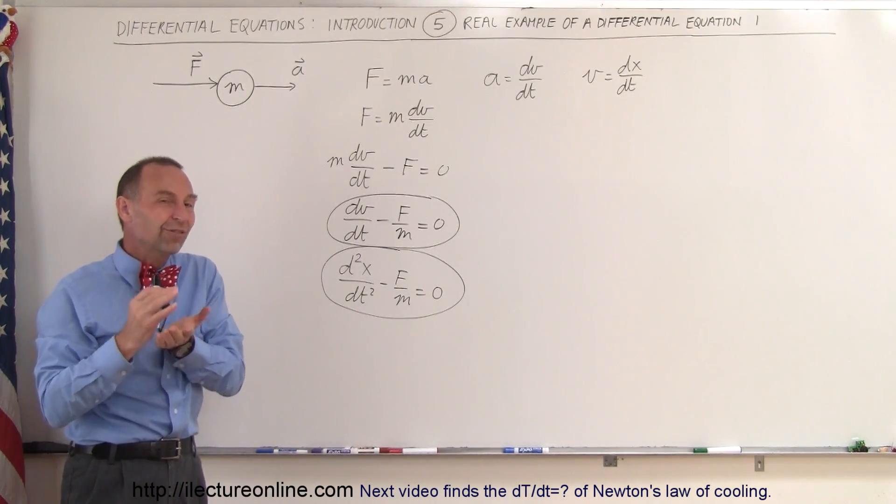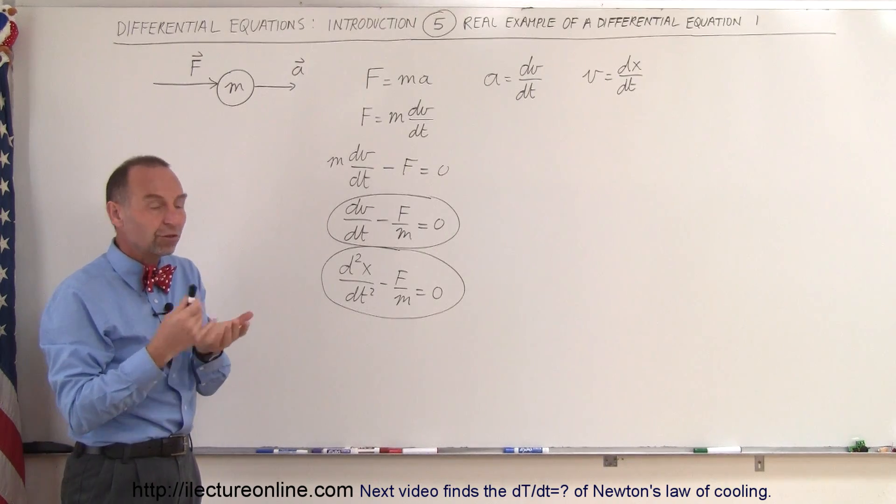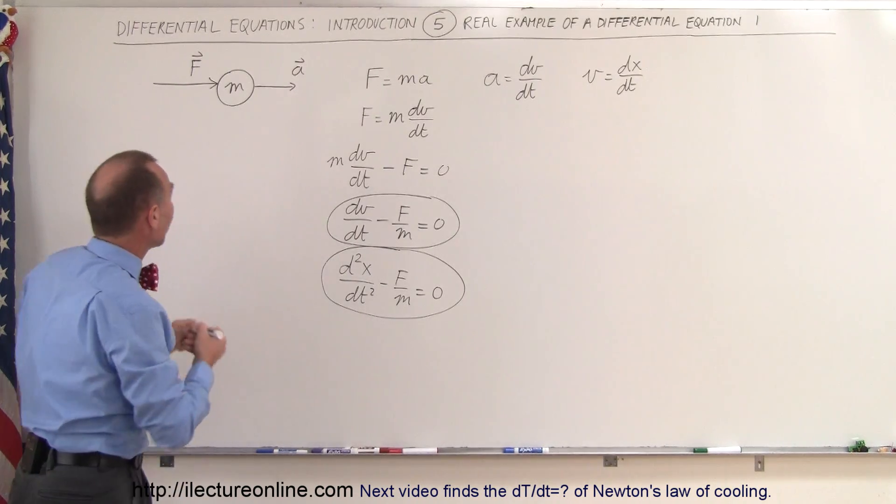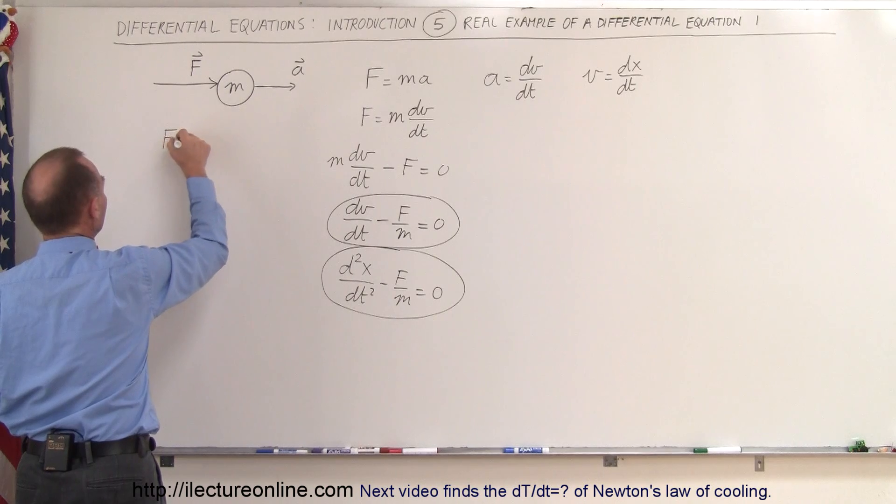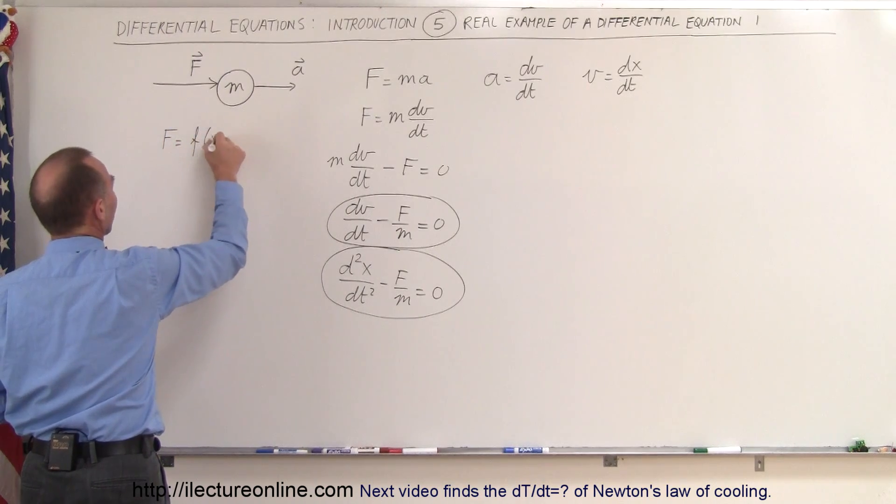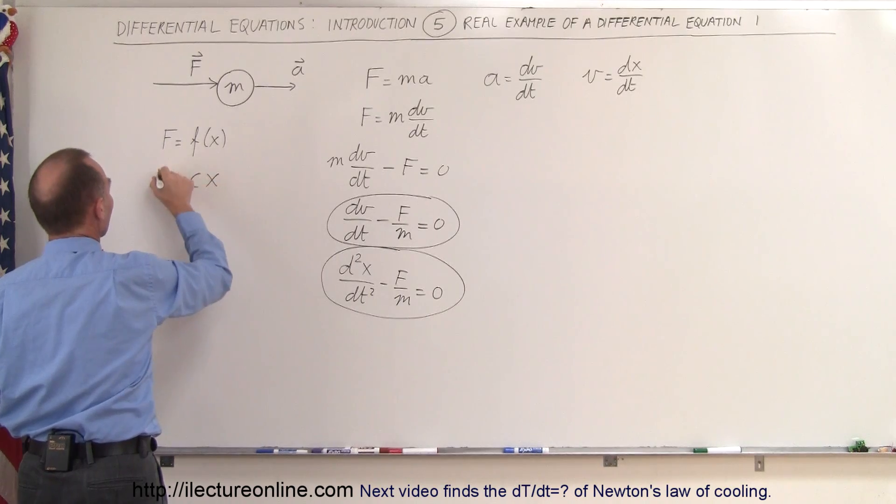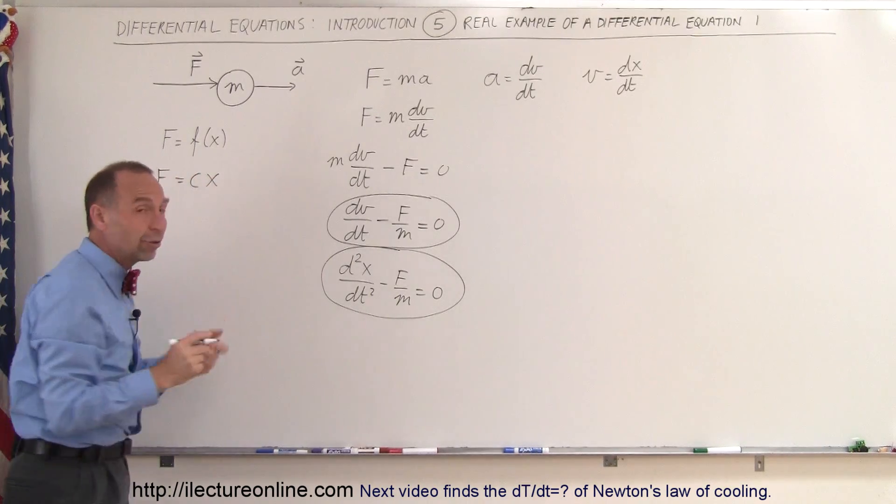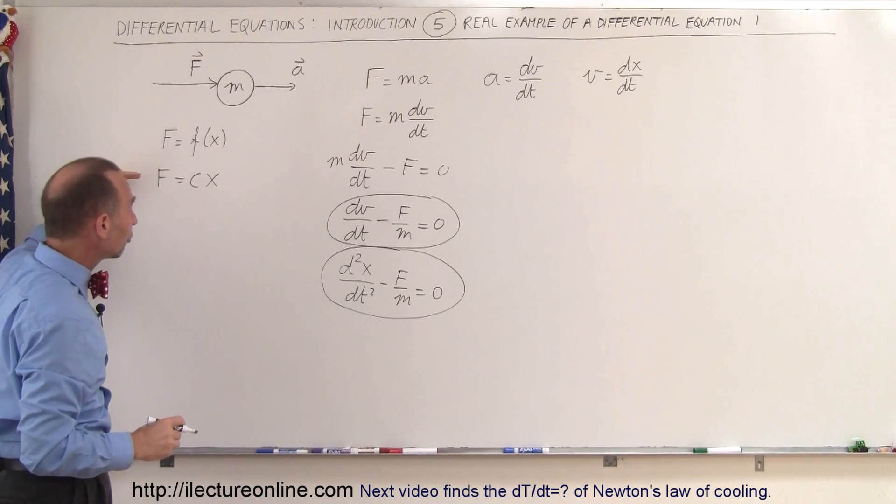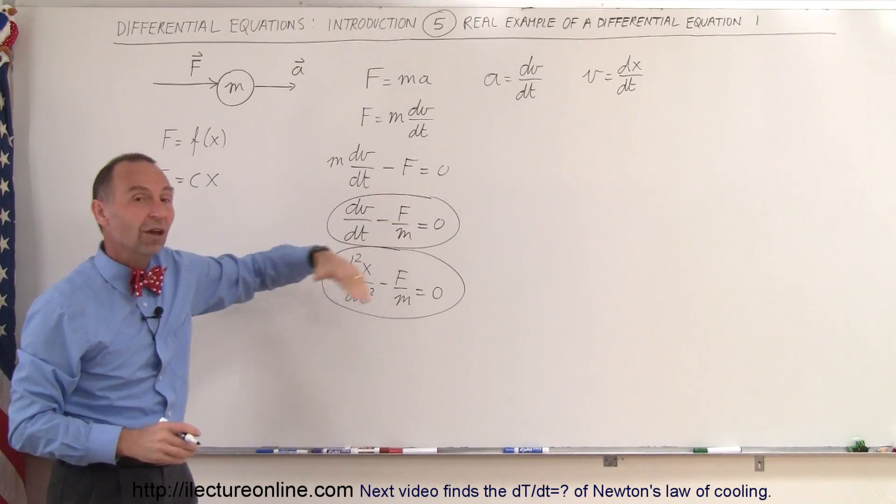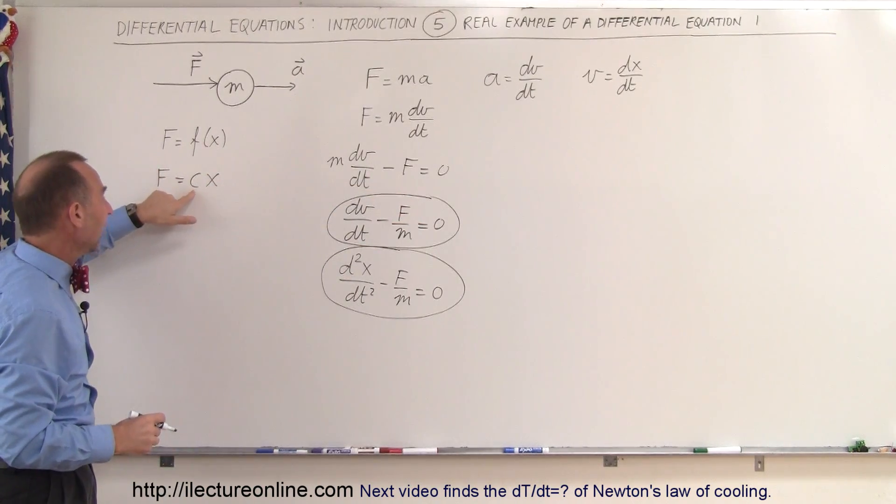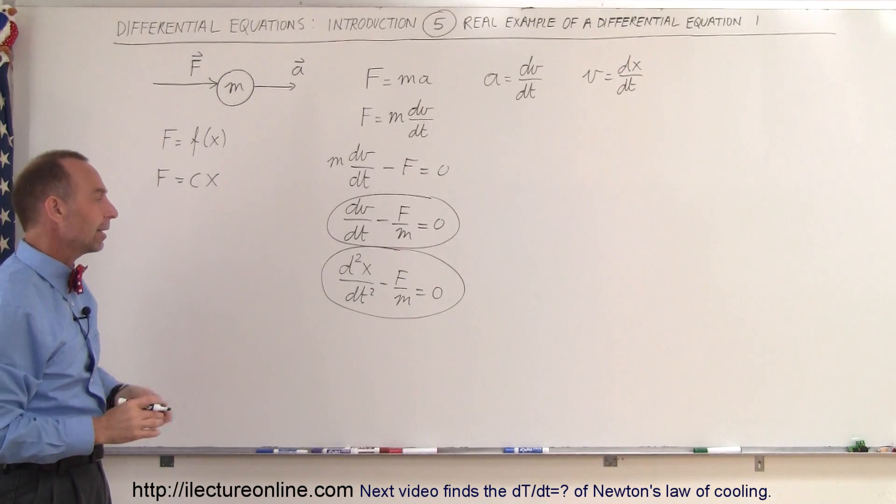Now what if force was not a constant? What if the force depended on position? For example, what if f was a function of x? For example, let's say that is equal to c times x. In other words, the force would increase by some amount as x increases. As you continue to gain more and more distance, the force would increase linearly.